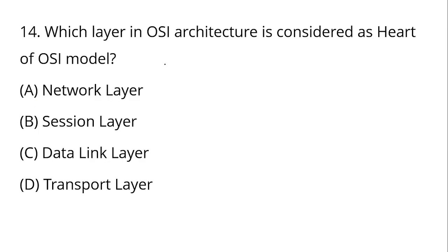Which layer in the OSI architecture is considered the heart of the OSI model? The OSI model has 7 layers: Physical, Data Link, Network, Transport, Session, Presentation, and Application. The Transport layer is considered the heart of the OSI model.